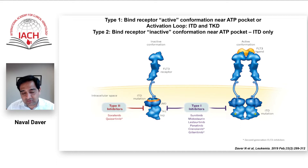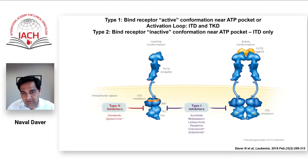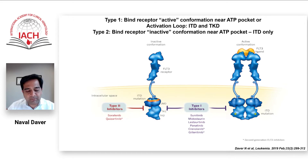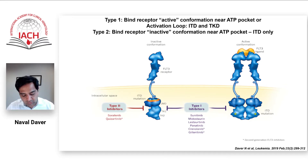That does not mean we don't get resistance to the type 1 inhibitors. It just means that the type of resistance is different, through off-target mutational acquisition such as mutations in the RAS/MAP kinase pathway, PTPN11, and BCR-ABL. So this is important because it means that these drugs are different, they work on different mutations, and it may be possible to use them sequentially, getting long-term benefit.